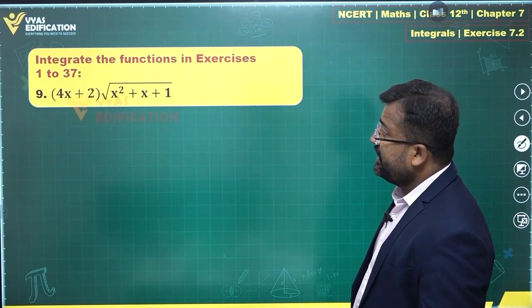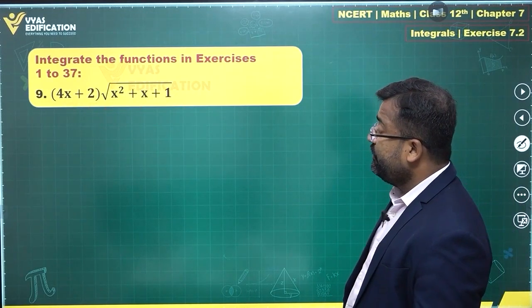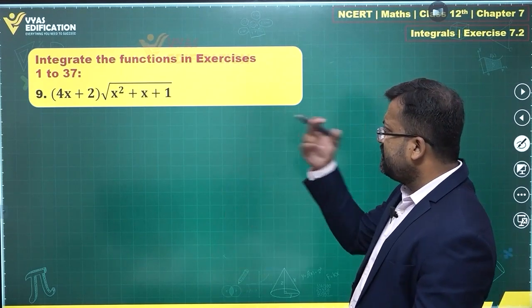In the ninth question, we have 4x plus 2 outside, and under the root, we have x square plus x plus 1. It looks complicated, right?